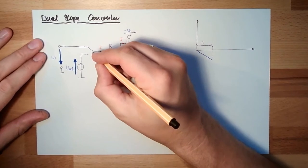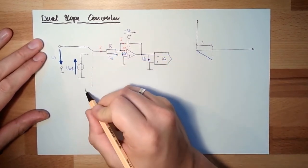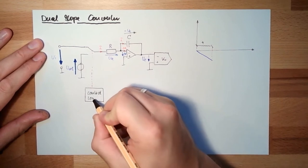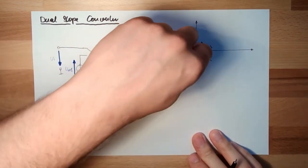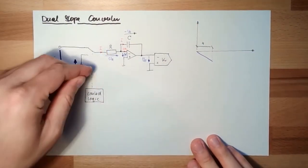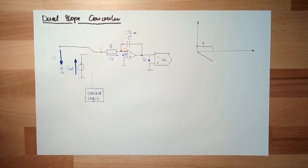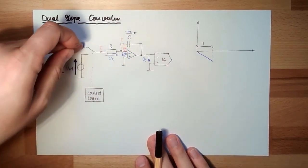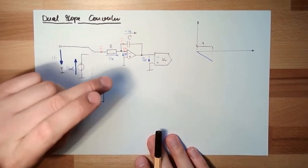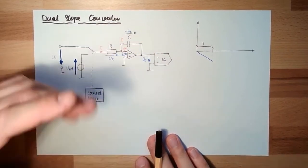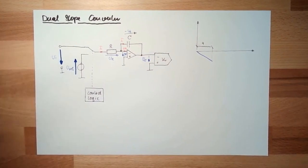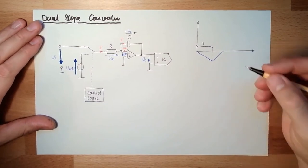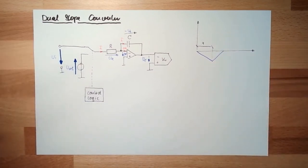The control logic, and this is after the time, it is switching to the reference voltage. The reference voltage is now in the other direction. So this means the current will run in the other direction. This means the capacitor will be deloaded, emptied, and we will drop. And then, we need to measure this time here, T1.